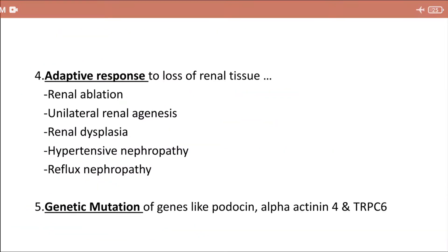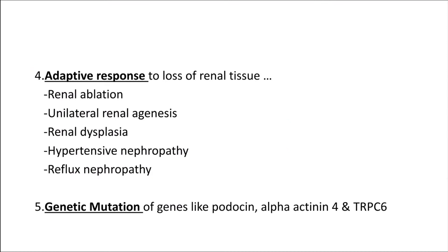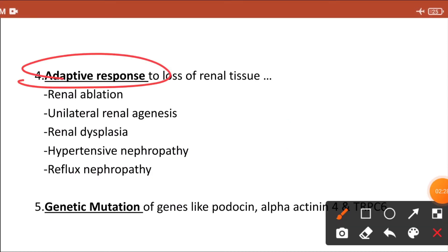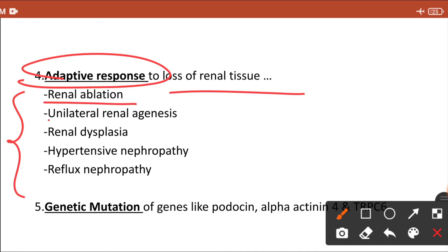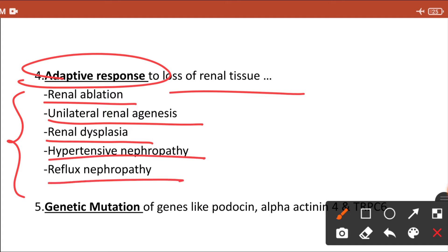The third important etiology for FSGS development is IgA nephropathy, which we will see in the next lecture. The fourth category is adaptive response — adaptive response to the loss of renal tissue. Conditions causing renal tissue loss include renal ablation, unilateral renal agenesis, renal dysplasia, hypertensive nephropathy, and reflux nephropathy. Compensatory chronic inflammation and fibrosis in these conditions leads to development of FSGS.